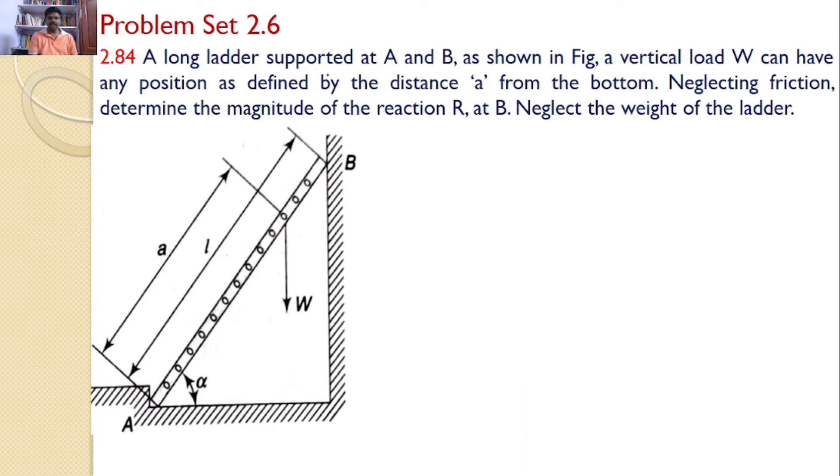A long ladder supported at A and B, as shown in the figure. A vertical load W can have any position as defined by the distance 'a' from the bottom. So, neglecting friction, determine the magnitude of the reaction R at B. Neglect the weight of the ladder.